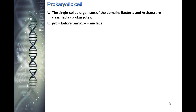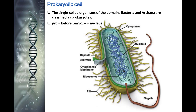Now we understand what prokaryotes are, let's see what they are made of. Prokaryotic DNA is found in the central part of the cell in a dark region called the nucleoid. Prokaryotic cells have a plasma membrane and cell wall which surround and protect the cell. The cytoplasm in prokaryotic cells is a gel-like substance in which all other cellular components are suspended.